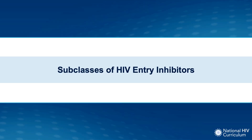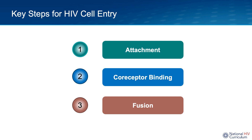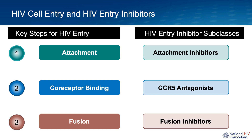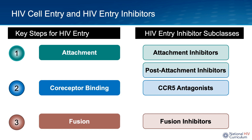Now that we've established the targets, let's briefly review the sequential steps in the HIV entry process. There are three main steps: first, HIV attachment to the host CD4 receptor; second, HIV binding to a host cell co-receptor; and third, fusion of the HIV membrane with the host cell membrane. The HIV entry subclasses correspond to these steps: attachment inhibitors block CD4 attachment, CCR5 antagonists block co-receptor binding, and fusion inhibitors block membrane fusion. There is also one more subclass — post-attachment inhibitors — which act after CD4 attachment but before co-receptor binding.